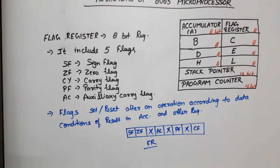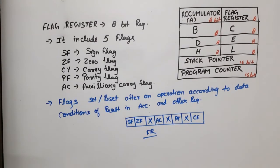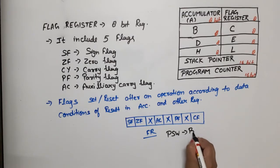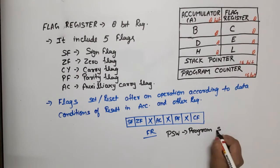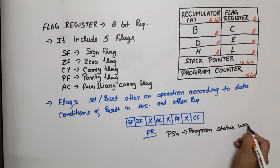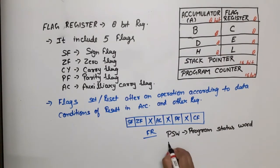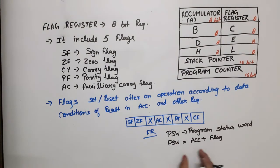What is PSW? PSW means Program Status Word. PSW is equal to accumulator plus flag register. If you have an operation, what is the value in the accumulator and what is the value in the flag register, we combine them to get the program status word. This is an 8-bit register, this is an 8-bit register, so PSW will be a 16-bit register.